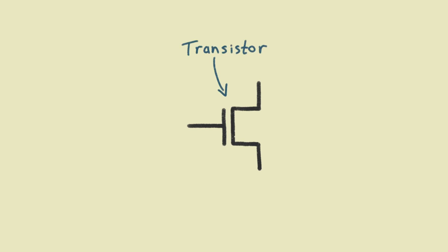Transistors are just electrically controlled switches. If we apply high voltage, logic one, it works like a regular wire. If we apply low voltage, it becomes an open circuit.